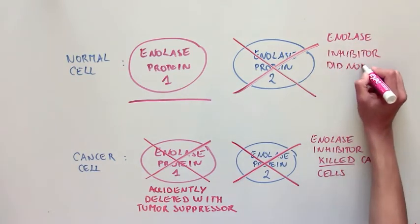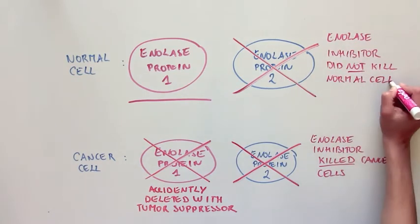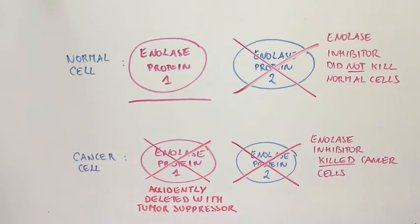Instead, the normal cells kept on dividing, as if nothing had ever happened. In addition, the anylase inhibitor prevented the cancer cells from making tumors when injected into mice.